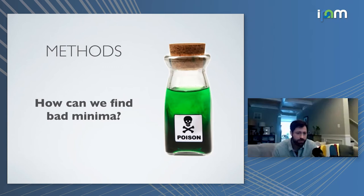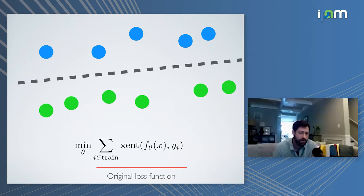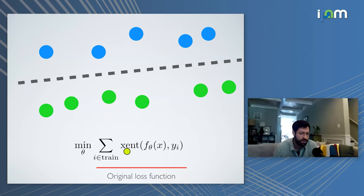To examine the difference between good and bad minima empirically, we use poisoned optimizers that explicitly construct bad minima. These are built by adding poison holdout data and a reverse cross-entropy term to the objective — reverse cross-entropy is zero when you classify something wrong and large when you classify it correctly. Minimizing this combined objective finds bad minimizers that perfectly interpolate training data but fail on holdout data. The poison data is then discarded and never used in future evaluations.